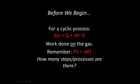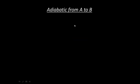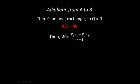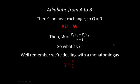So, how many steps or processes are there? The first one is an adiabatic process from A to B. The common characteristic of an adiabatic process is that there's no heat exchange, so Q equals zero. This reduces our delta U expression to delta U equals W. To calculate work for an adiabatic process, W equals P₁V₁ minus P₂V₂ over gamma minus 1, where P₁ and V₁ are the initial pressure and volume, and P₂ and V₂ are the final pressure and volume. For monatomic gas, gamma is always 5/3.